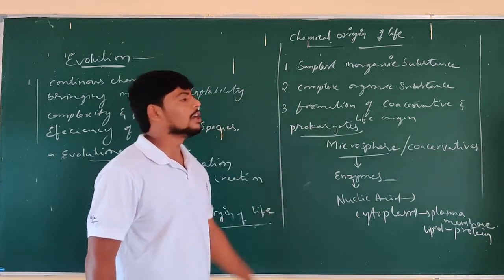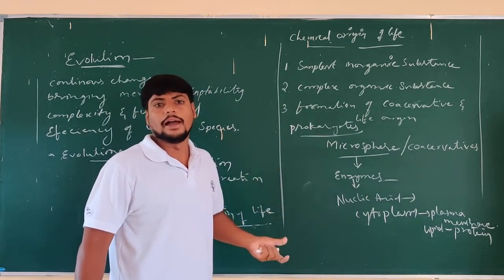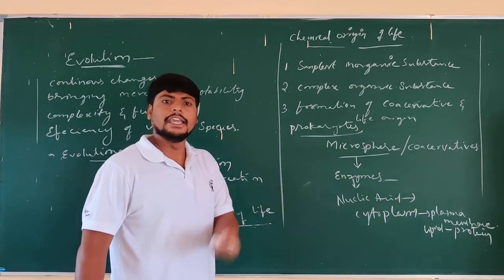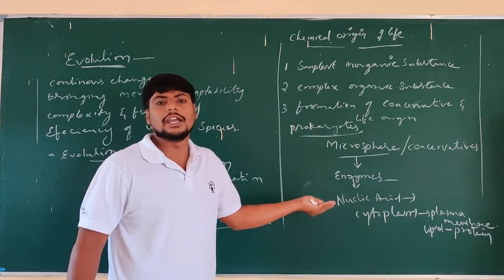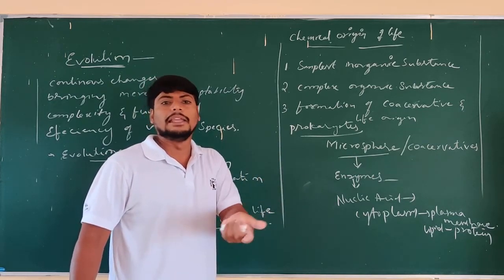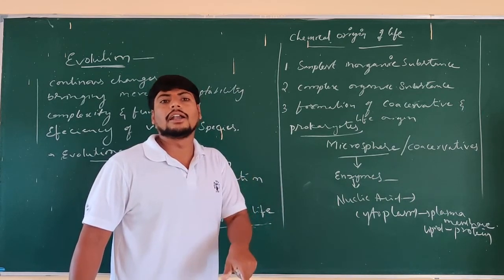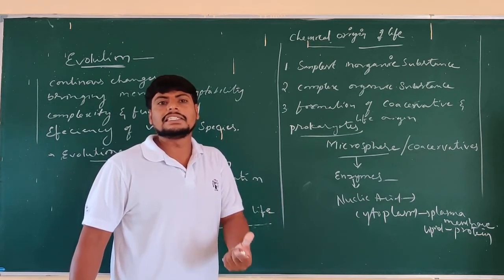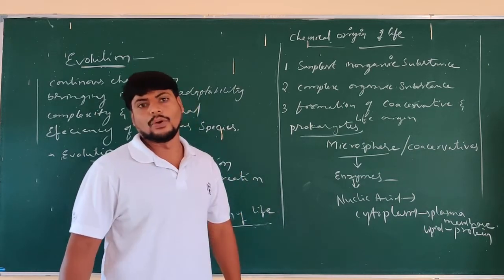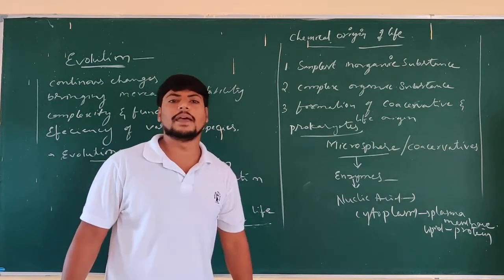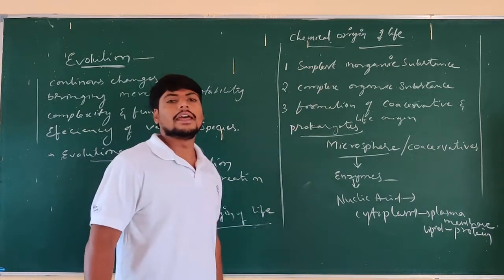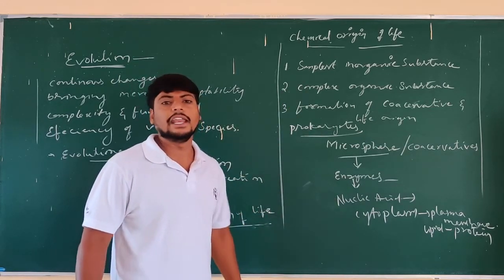The chemical origin of life theory was experimentally proved by Miller and his associates. In his experiment, conducted under artificial conditions in a vacuum tube, Miller used water and minerals like hydrogen, carbon, and methane. The result was the formation of methane gases and amino acids, which associated to form proteins, then tissues, then organs, then organ systems, and finally organisms.